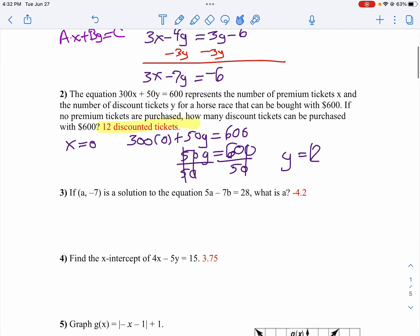On number 3, we have this ordered pair, A comma negative 7. Notice we've got A and B in our problem. Since we have A and B in our problem, that means B is actually negative 7. So let's substitute negative 7 in there. So we'll go 5A minus 7 times negative 7 equals 28.